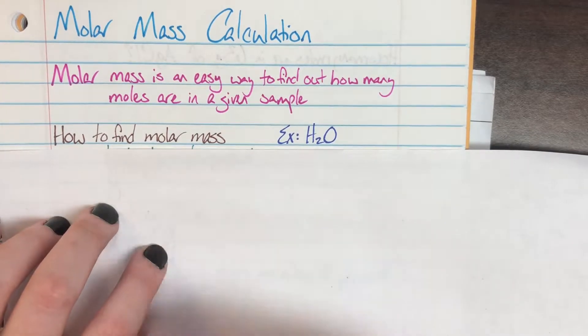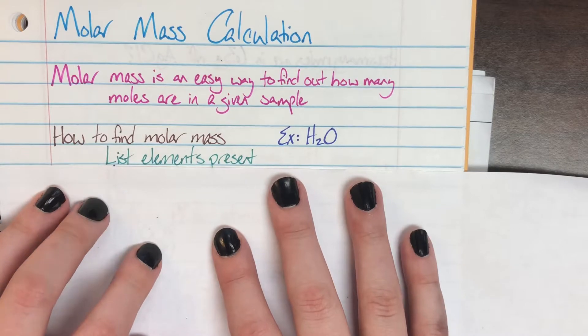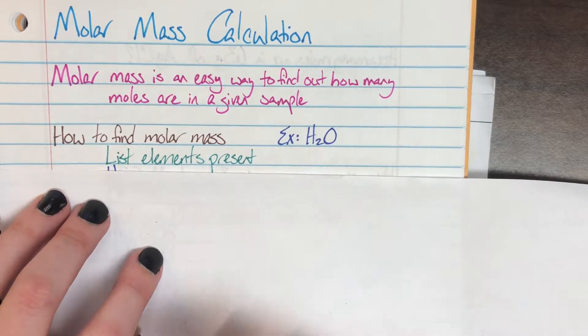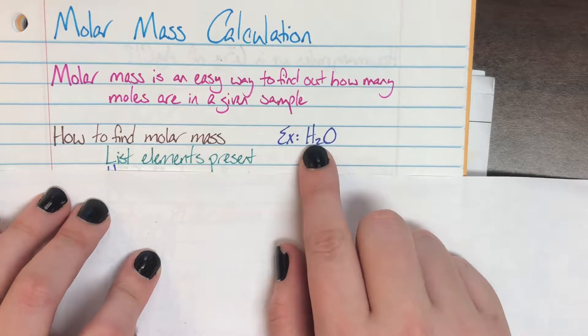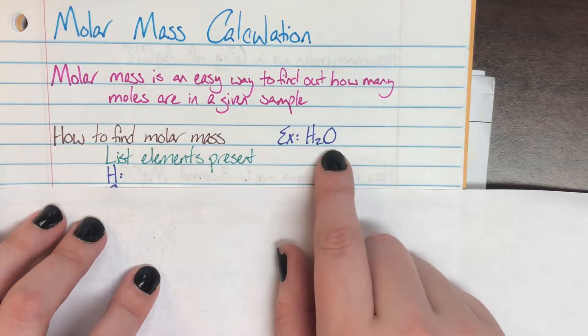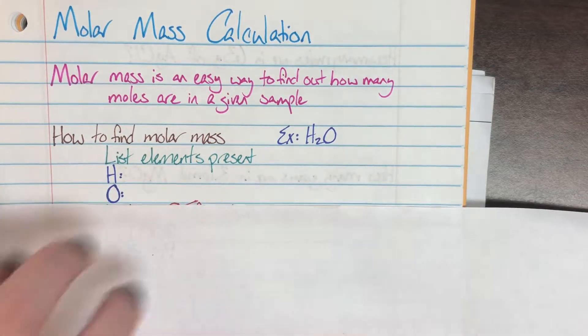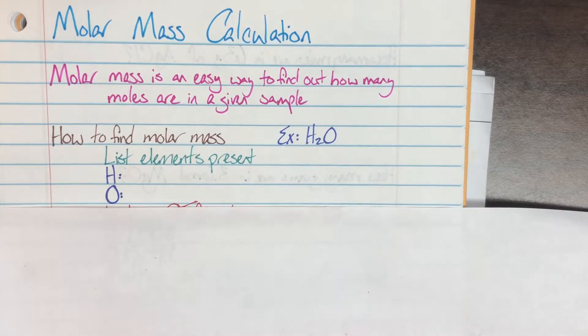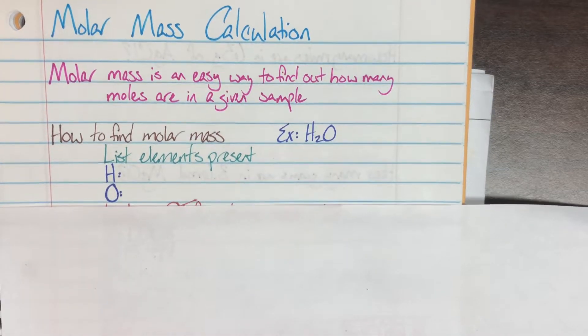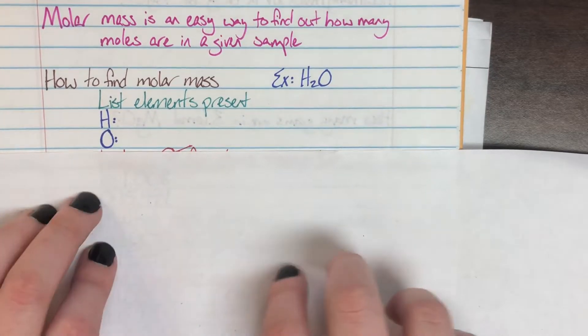So my very first step that I always do whenever I'm calculating a molar mass is I just list everything that's in the actual compound. So H2O has two things in it: it has hydrogen and it has oxygen. Cool! That very first step is done just by looking at the actual compound and agreeing to what's actually present. So we have what's actually in our compound listed: hydrogen and oxygen.